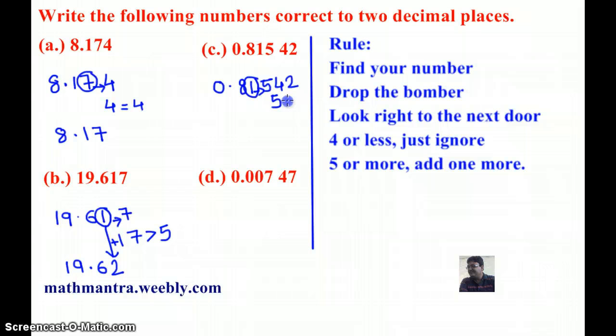Okay, so 5 equals 5 and 5 or more, add one more. So, I am going to add 1. And, my answer will be 0.82.